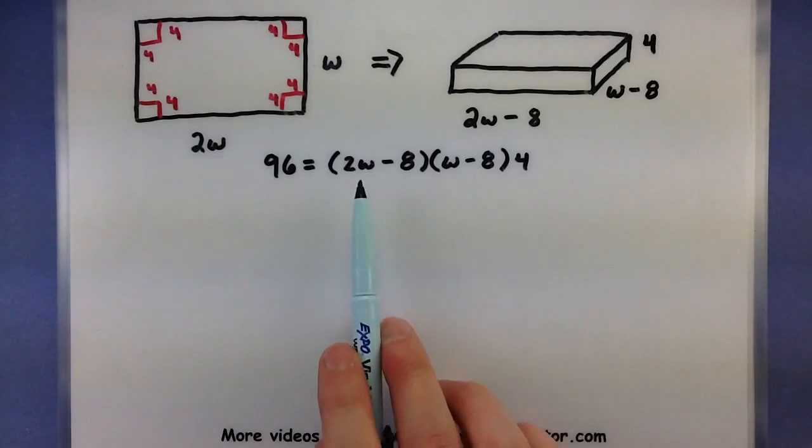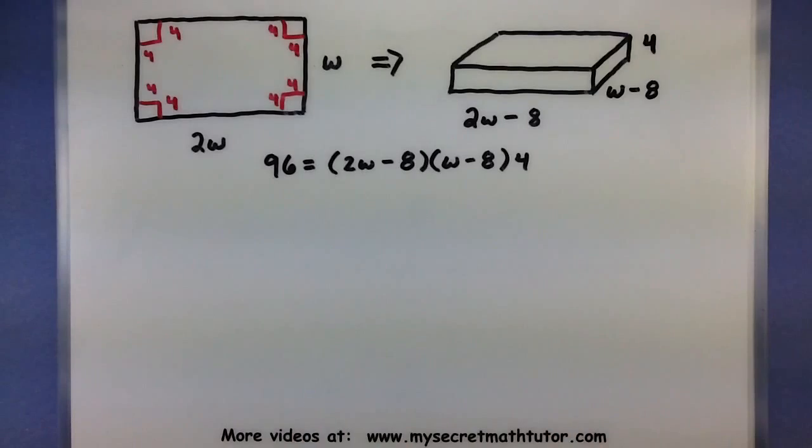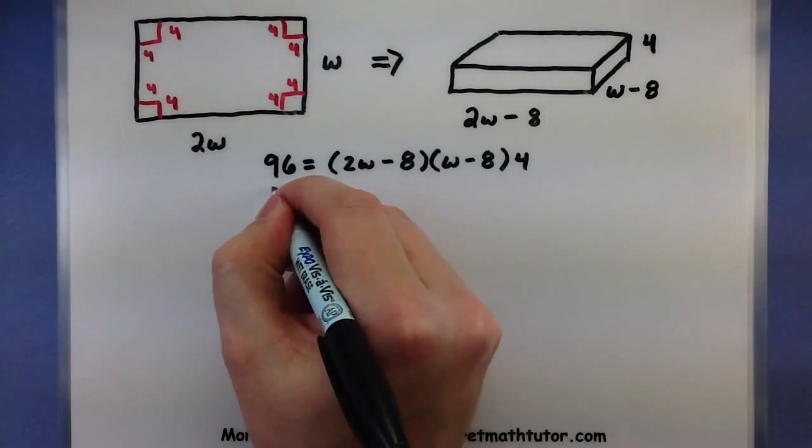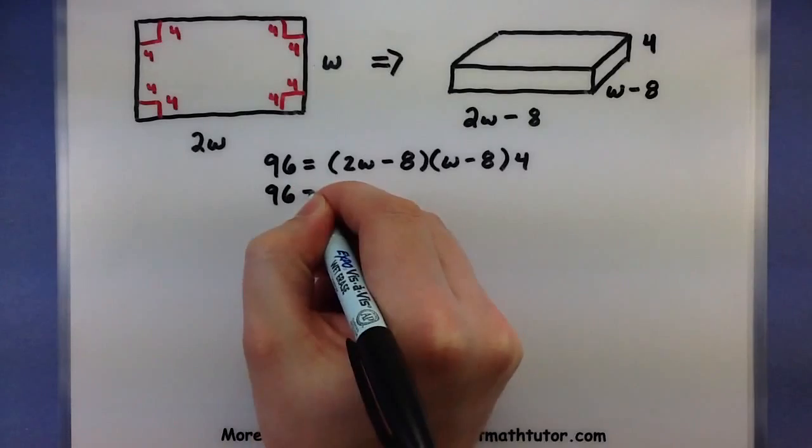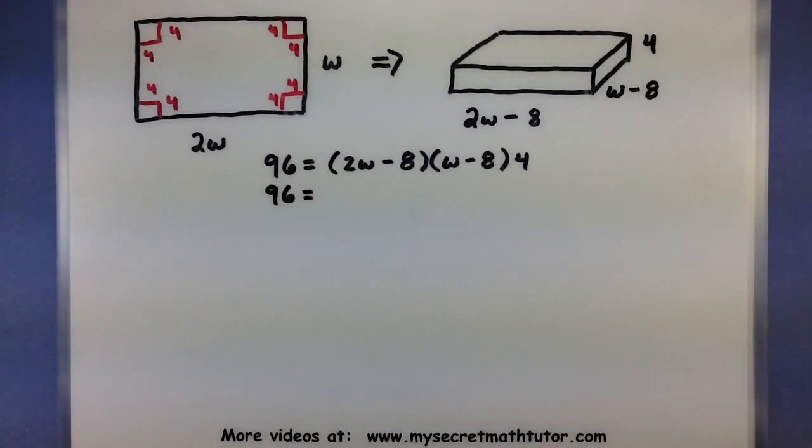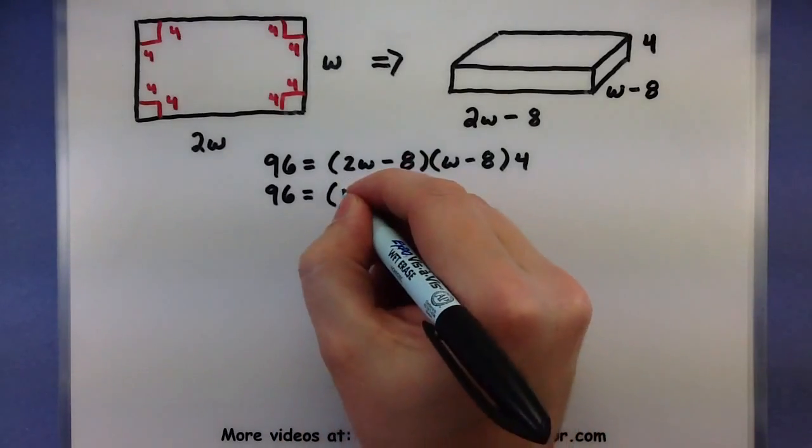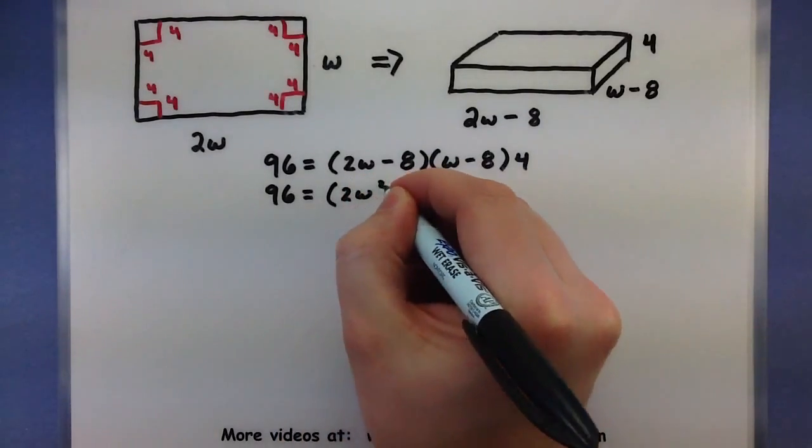Now as you can see this will actually create a quadratic because both my W's will multiply together, giving me a W squared. Watch for that to happen along the way. Alright, let's work to combine much of this together. So first I'll FOIL this out, 2W times W, giving me a 2W squared.